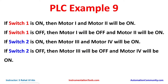Example 9. If switch 1 is on, then motor 1 and motor 2 will be on. If switch 1 is off, then motor 1 will be off and motor 2 will be on. If switch 2 is on, then motor 3 and motor 4 will be on. If switch 2 is off, then motor 3 will be off and motor 4 will be on.